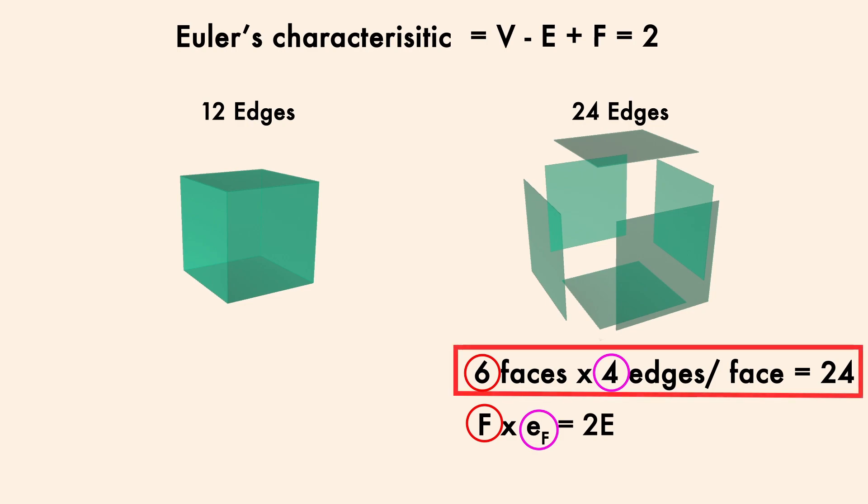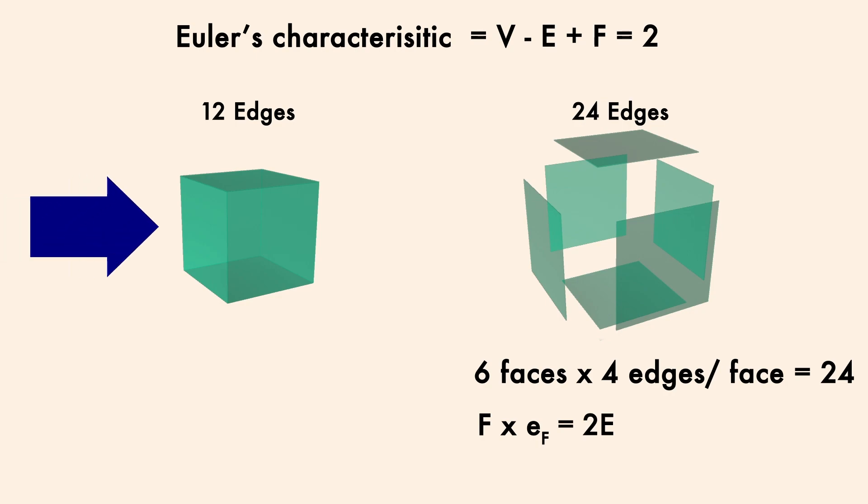So I really just wrote the equation above in more general terms. Then another thing to note is that on the connected cube, there are 8 corners, or vertices, each of which has 3 edges touching them. If we multiply 8 by 3, we again get 24, or twice the number of edges.